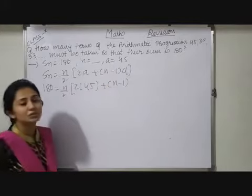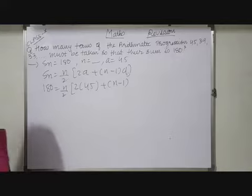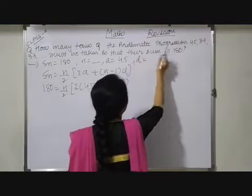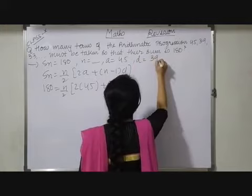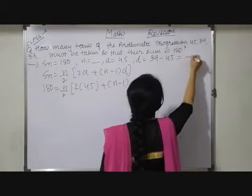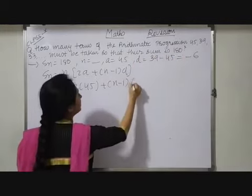D is a common difference. So how to find out common difference? A2 minus A1. So here D equals to A2 is 39 minus 45 which equals to minus 6. So place this value here.